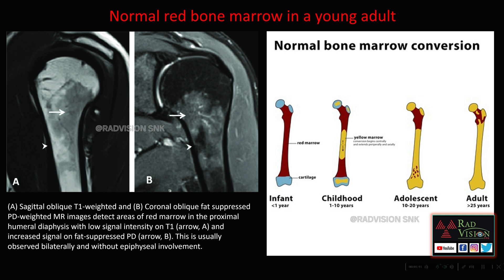This can be observed bilaterally and without epiphyseal involvement. In the infant it is completely red marrow, but in childhood there is gradually yellow marrow in the center which extends cranially and caudally. In adults, two-thirds to three-fourths of the bone is filled by yellow marrow, with red marrow only at the proximal shaft. In adults greater than 25 years it is completely replaced by yellow marrow, with red marrow at the proximal one-third of the shaft and metadiaphyseal region, sparing the epiphysis. This should not be confused with tumor or edema.